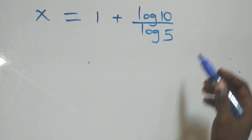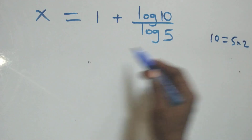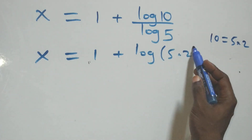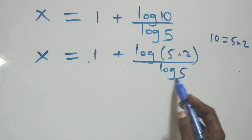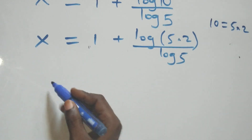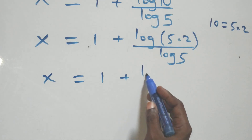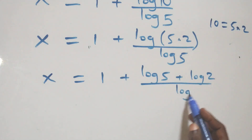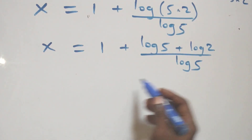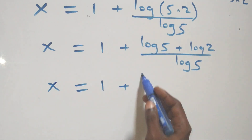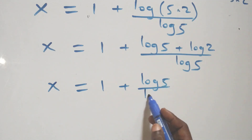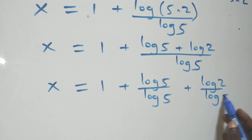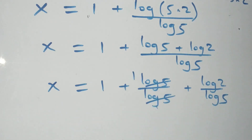We express 10 as 5 times 2, giving x = 1 + log(5×2)/log(5). Applying the product rule of logarithms again, this becomes x = 1 + (log(5) + log(2)) / log(5). Separating into two fractions: x = 1 + log(5)/log(5) + log(2)/log(5).